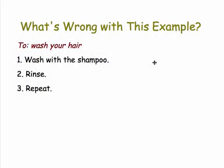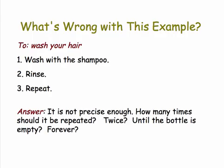But here's an algorithm that isn't precise enough. Let's see what's wrong. To wash your hair, wash with shampoo, then rinse, then repeat. If you follow this algorithm, you don't know when to stop. How many times should you repeat? Should you do it twice? Should you keep going until the bottle is finished? Should you go on forever? This algorithm is not precise enough.